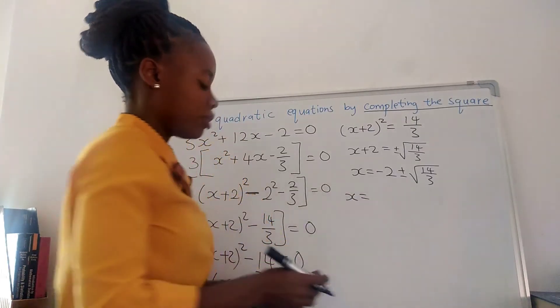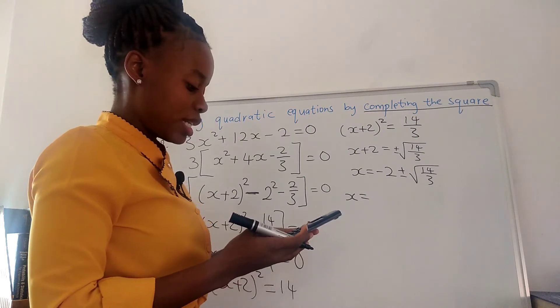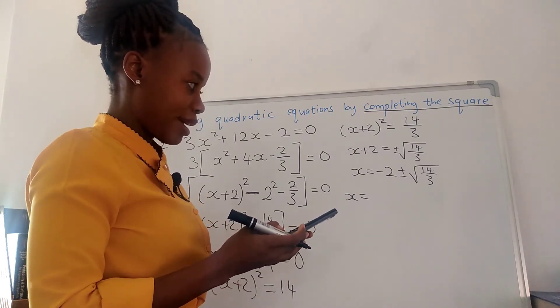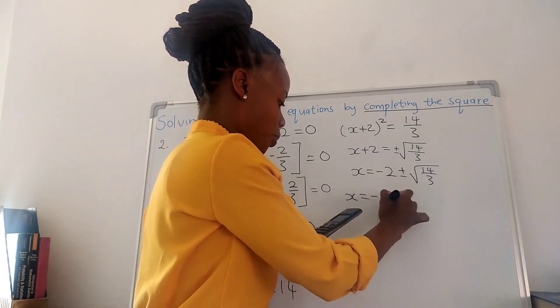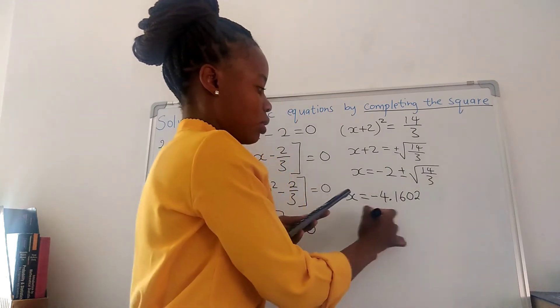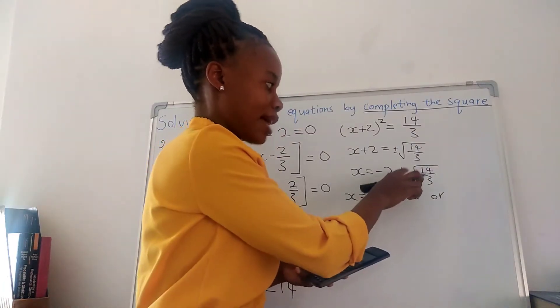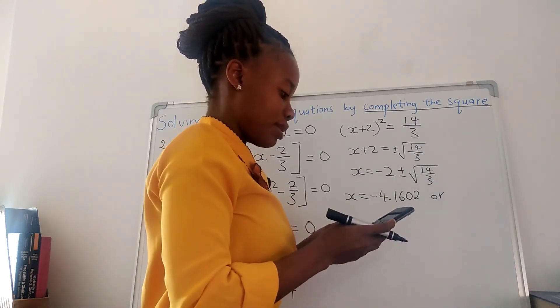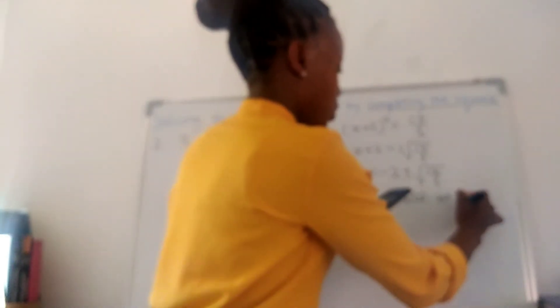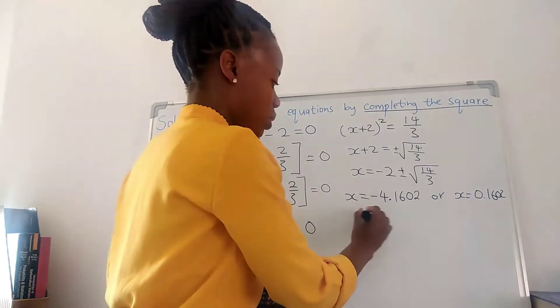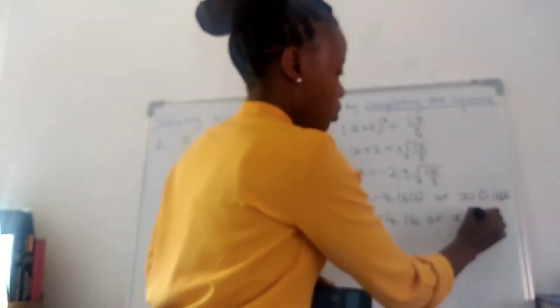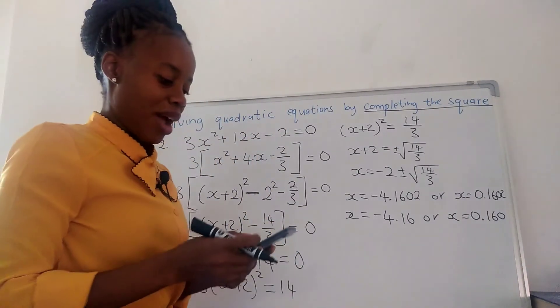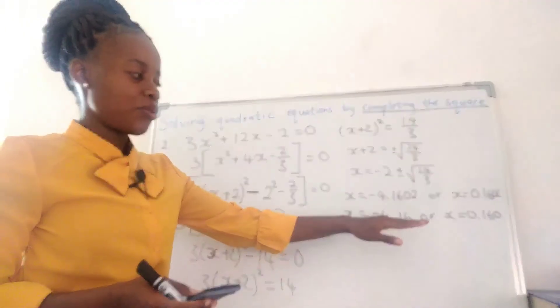We're supposed to have 2 solutions. So x equals negative 2 minus square root of 14 over 3, which is negative 4.160. Or x equals negative 2 plus square root of 14 over 3, which is 0.160. Remember to round off to 3 significant figures. This is the answer for number 2.